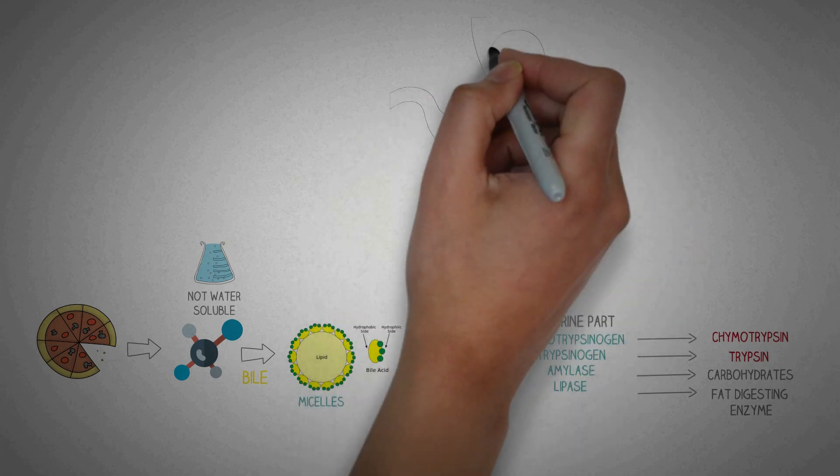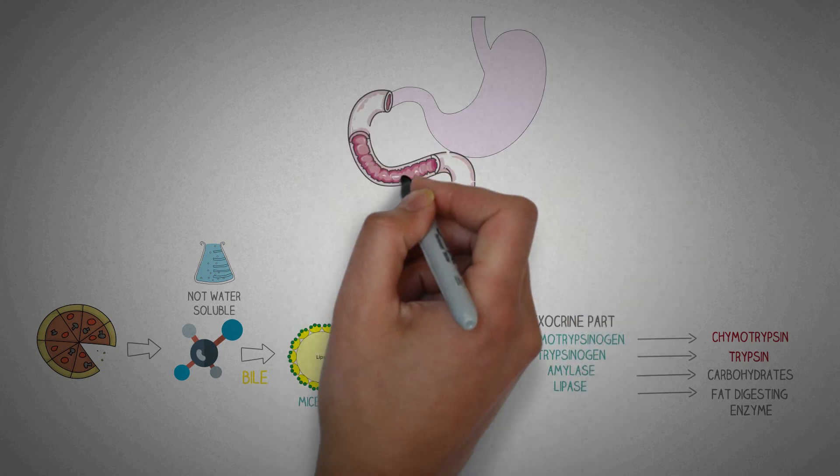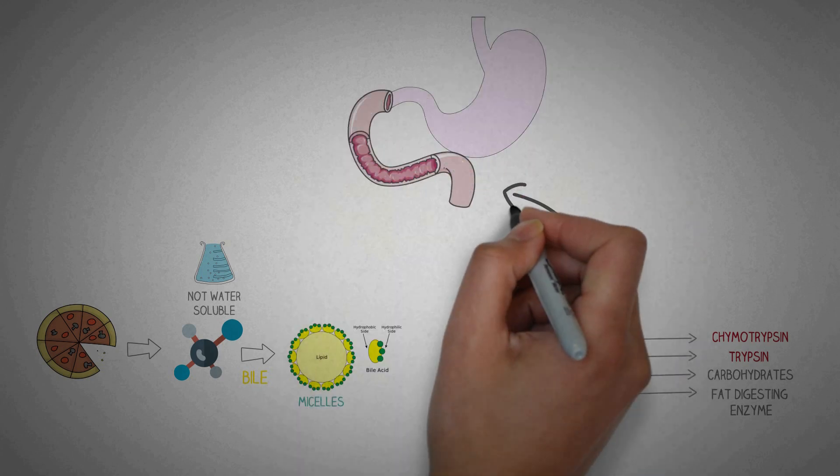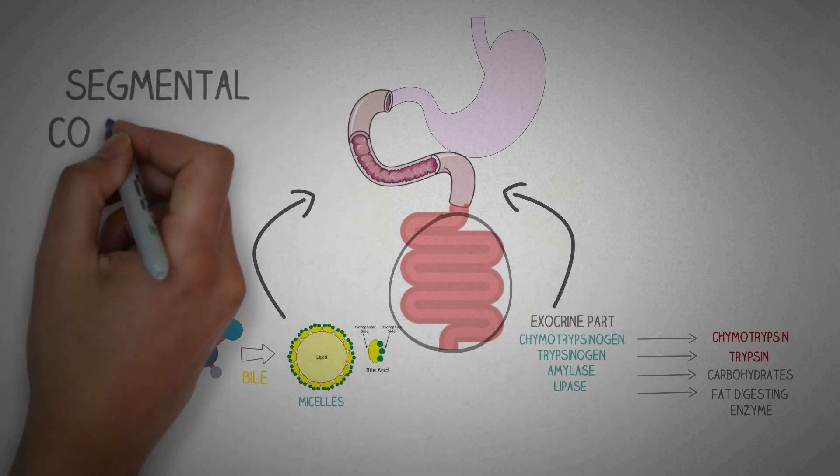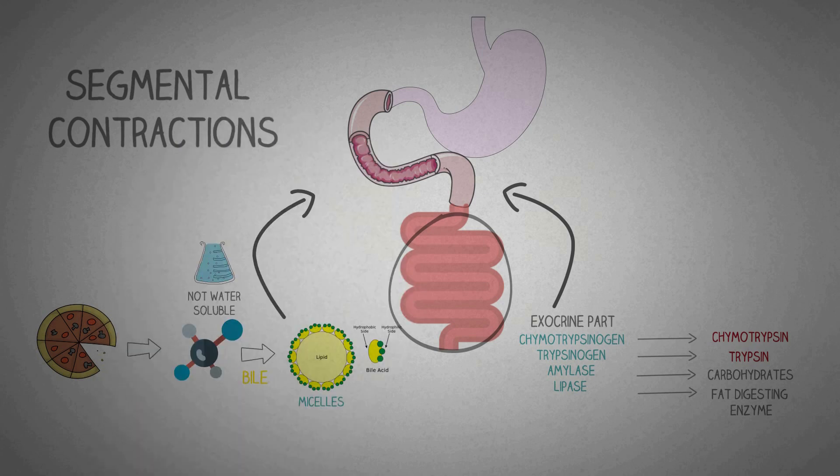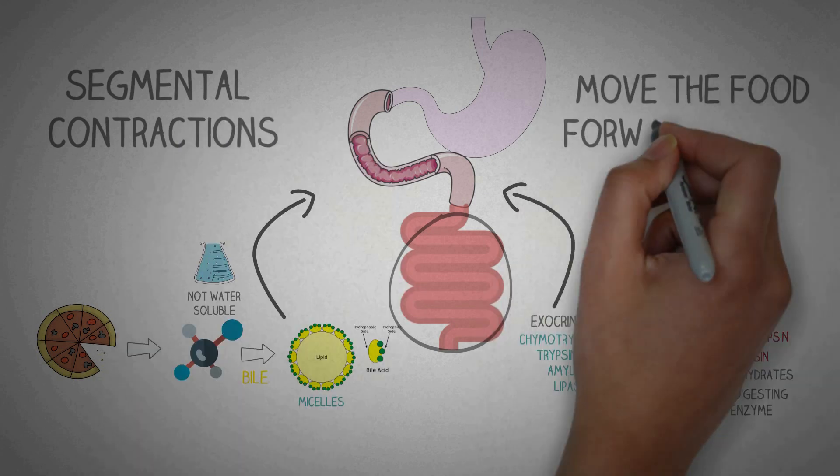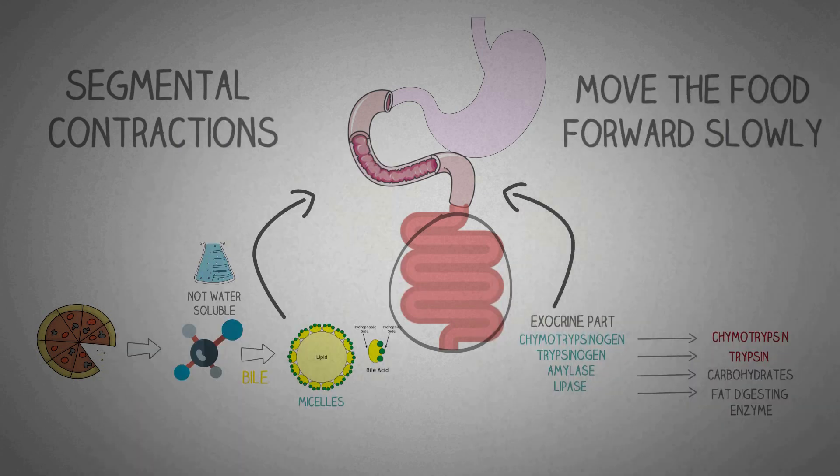Now approximately one hour after you take a meal, the food starts to enter the duodenum where all these enzymes and bile start their action. The food then passes slowly from duodenum to jejunum and then to ileum. Most of the digestion of food takes place in the small intestine. The wall of the small intestine contains layers of smooth muscles which cause segmental contractions that move the food forward slowly. The carbohydrates, fats, proteins and other nutrients are completely digested slowly over a period of many hours.